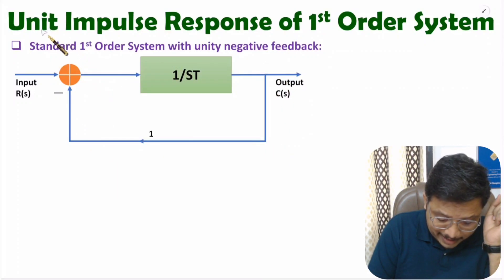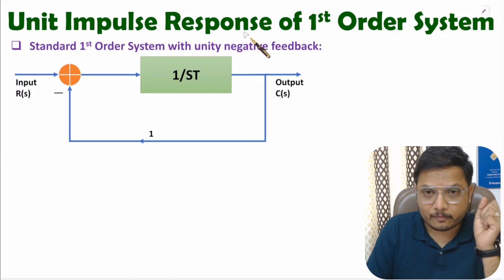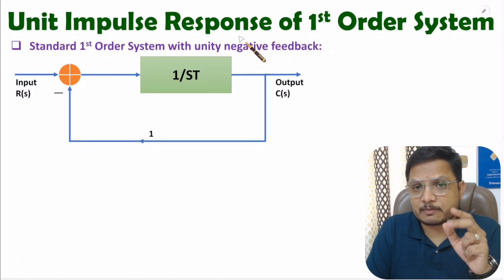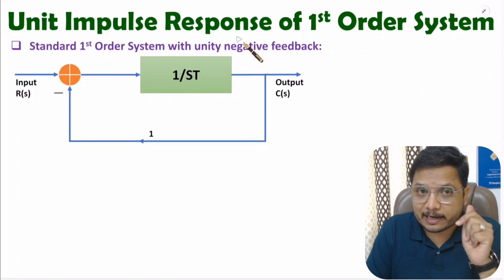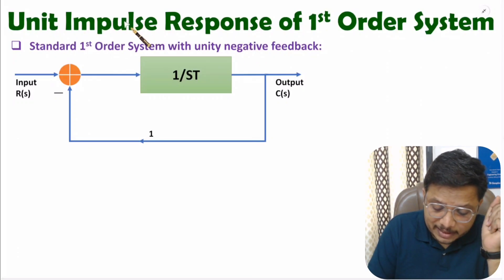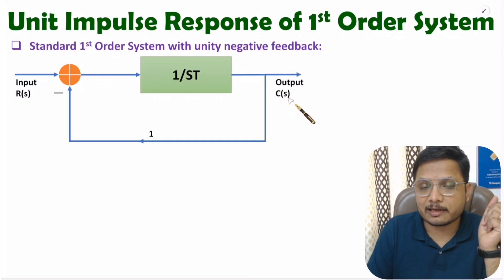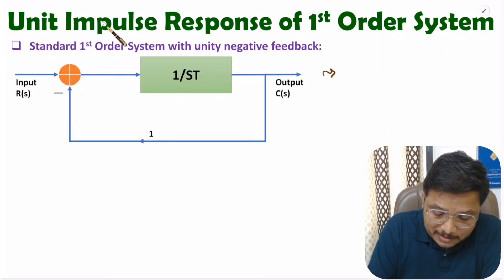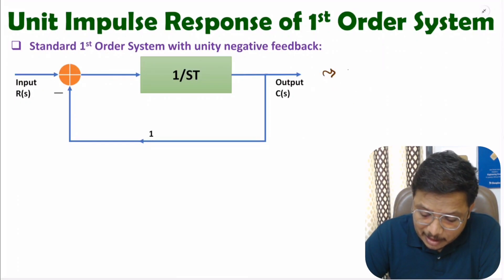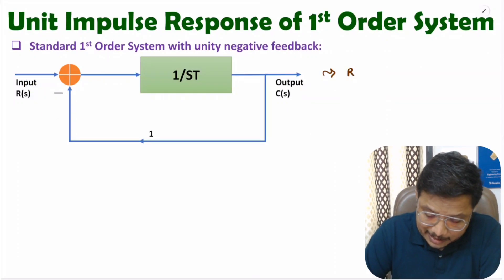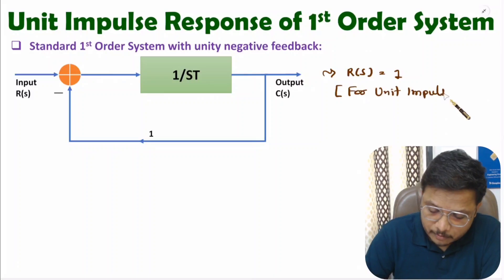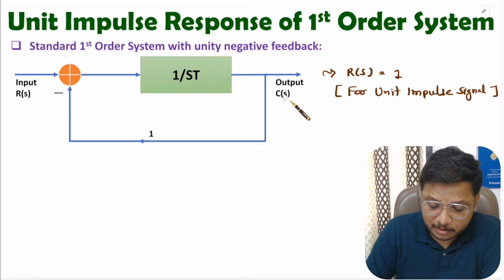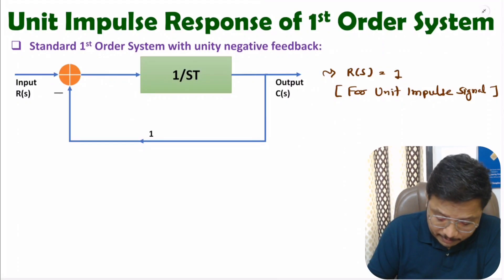Here we need to identify the unit impulse response. Unit impulse response means at the input side we have a unit impulse signal and we need to identify the output signal. At the input side, the unit impulse signal means R(s) equals 1. We need to identify the output, so let us identify the transfer function.